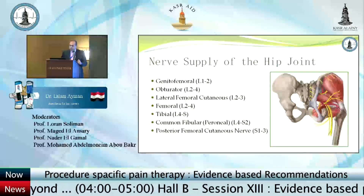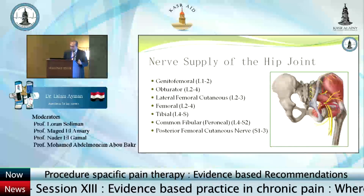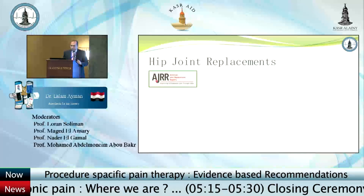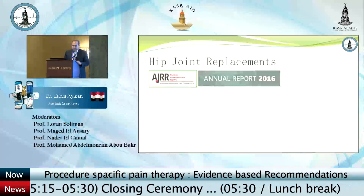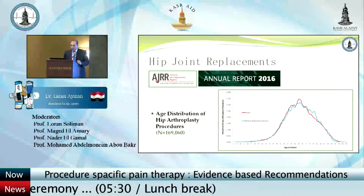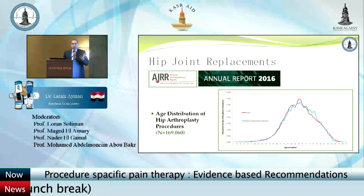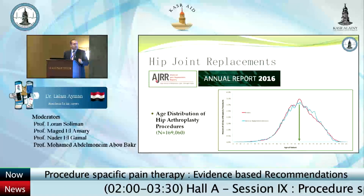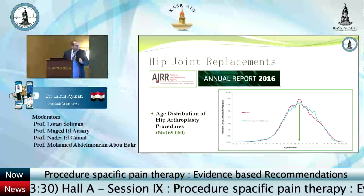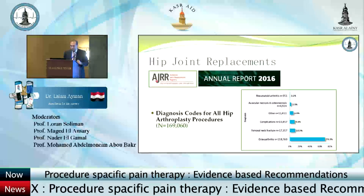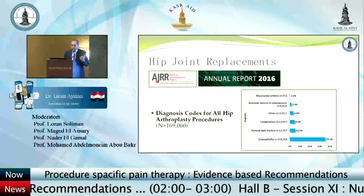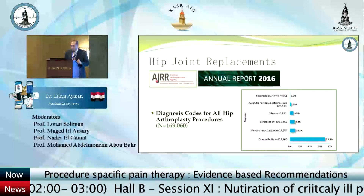The nerves involved include the genitofemoral, obturator, lateral femoral cutaneous, femoral, tibial, common peroneal, and posterior femoral cutaneous nerve. According to the American Joint Replacement Registry annual report in 2016, hip arthroplasties span a wide age range from the 30s onwards, but most hip replacement surgeries are performed around age 63. The leading diagnosis is osteoarthritis, followed by femoral neck fracture, then avascular necrosis and other complications.